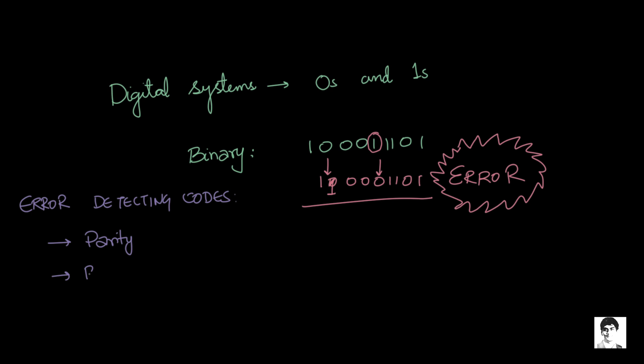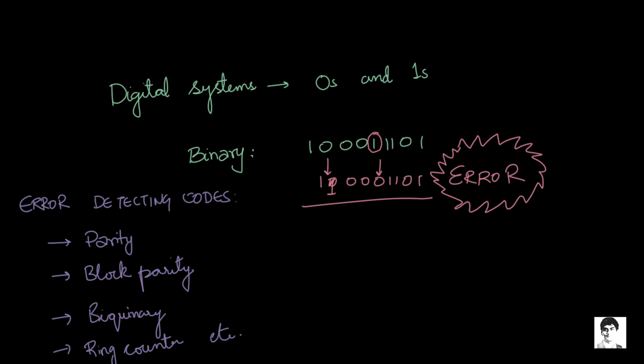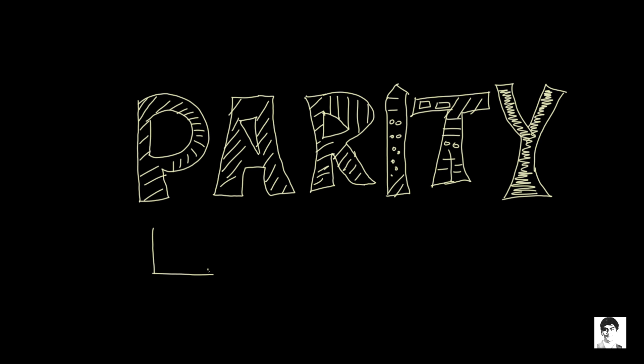Some of these error-detecting codes include parity, block parity, binary ring counter, and so on. Now we are going to look at the easiest method available to us for detecting an error. In this method, we add something called the parity bit. There are two types of parity: odd parity and even parity.